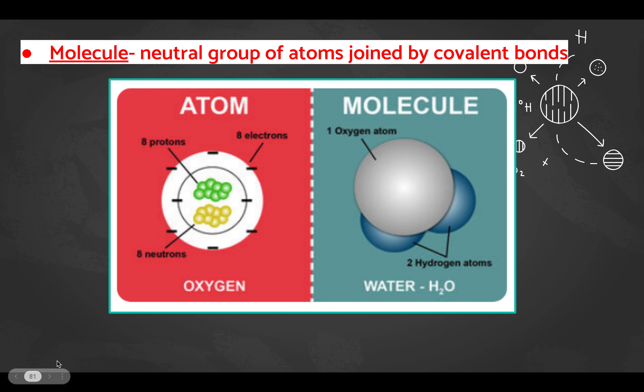When elements form covalent compounds by sharing electrons, the basic building block is called a molecule — a neutral group of atoms joined by covalent bonds. Water is an example of a covalent compound: hydrogen and oxygen share electrons forming that covalent compound. One molecule of water is one unit of a covalent compound.